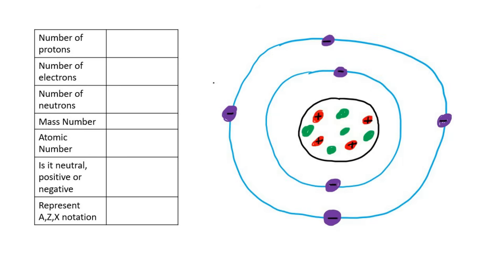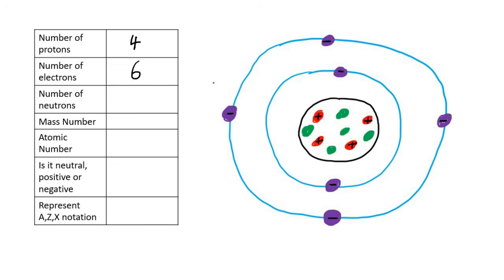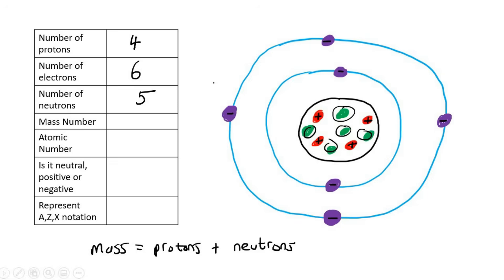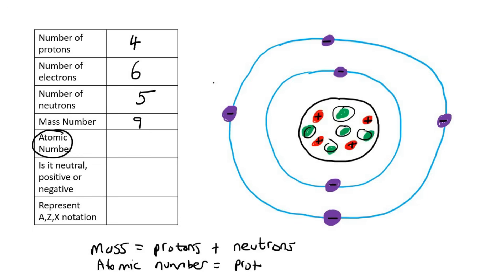Here's our first example. The first thing: work out the number of protons — those are the positives — one, two, three, four protons. Next, the number of electrons — those are on the outside — one, two, three, four, five, six electrons. Then the number of neutrons — those are not positive or negative — one, two, three, four, five. The mass number is protons plus neutrons, so four plus five equals nine. The atomic number is the same as the number of protons, which is four.